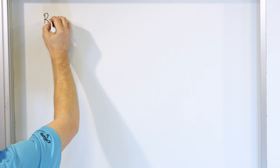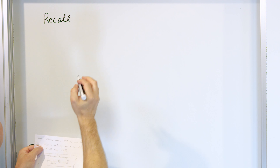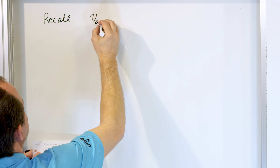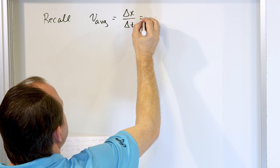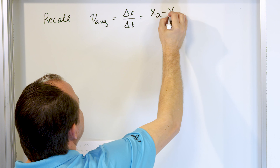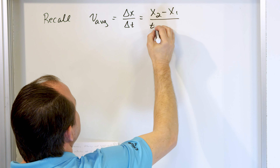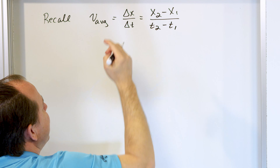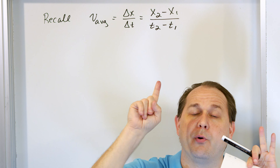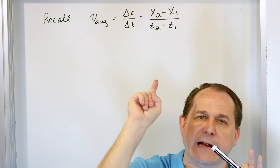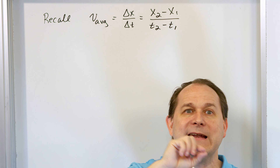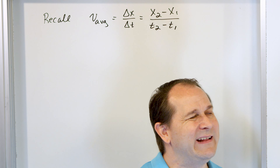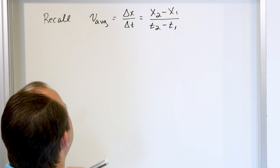From the last lesson, we learned what the idea of average velocity is. The average velocity is equal to delta x over delta t, where delta x is the final position minus the initial position, and delta t is the final time minus the initial time. Basically, we need two points on the curve — one at time one and another at time two. All we care about is how far the thing traveled and how long that took. Distance divided by time, very simple — it's the average velocity between those points in time.